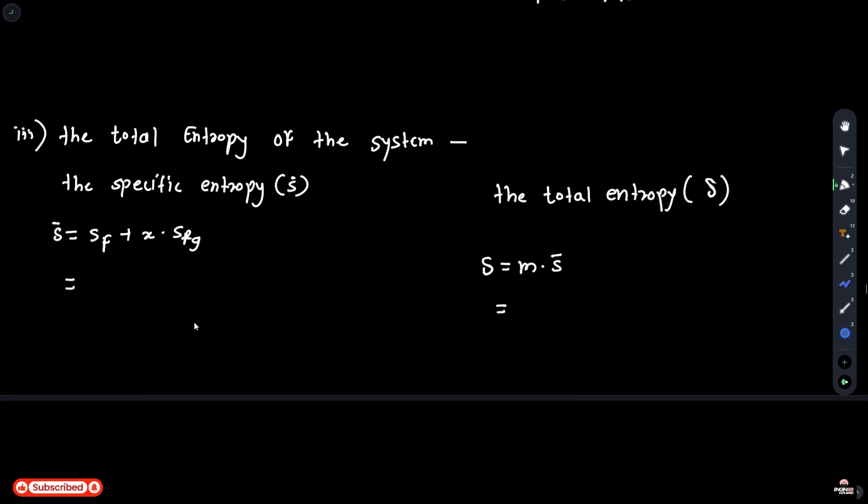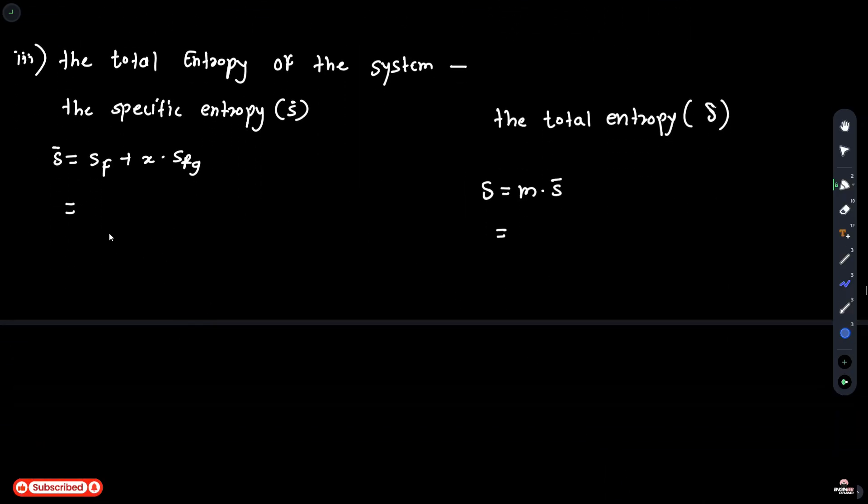Next, the total entropy of the system. First, the specific entropy S. So S is Sf 2.0457 plus 0.85 multiplied by Sfg 4.6139, which is equal to 5.967515 kJ per kg K.